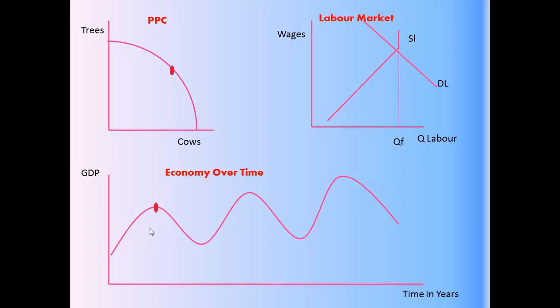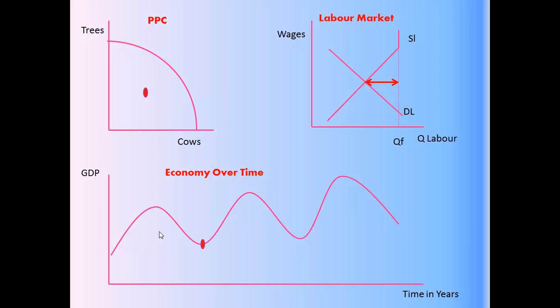In the case of the global financial crisis, they lost wealth, lost confidence in the future, and stopped spending. And when they stopped spending, employers had no need to hire workers anymore, so the demand for labour fell off, and that fed into the PPC — these two models feed into each other — and you'll see that the demand for labour goes down, and eventually it bottoms out at the bottom of the business cycle, and then the cycle repeats again.